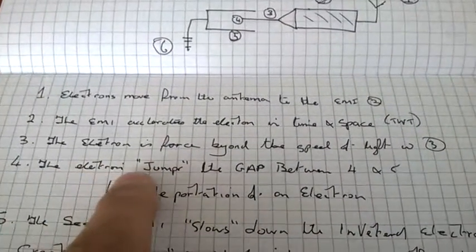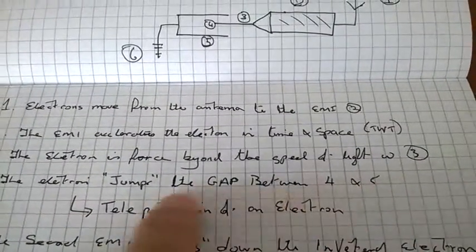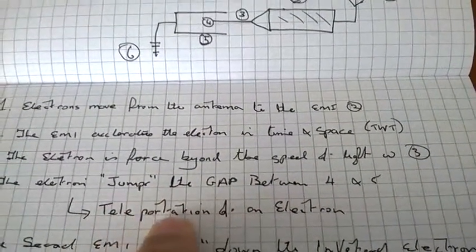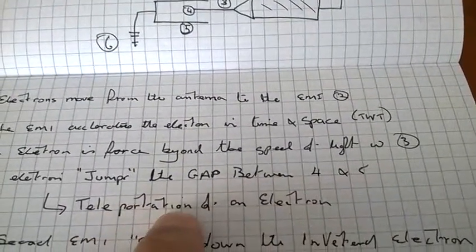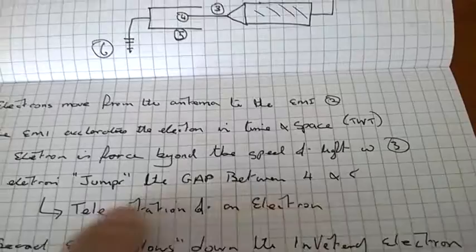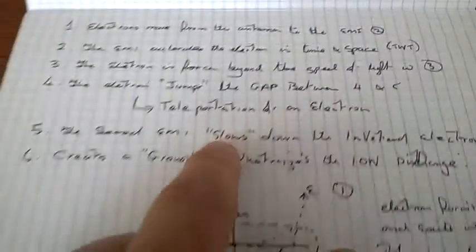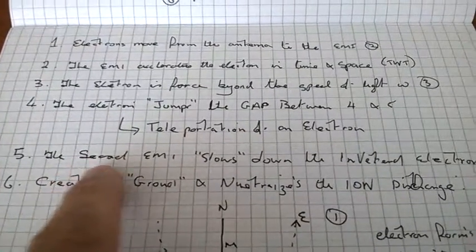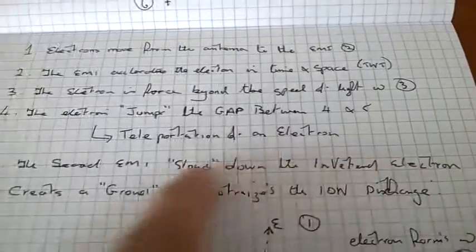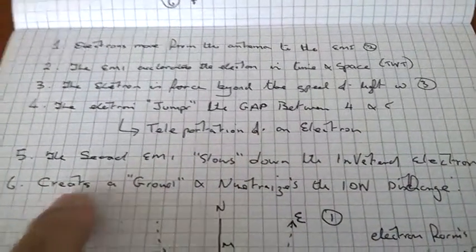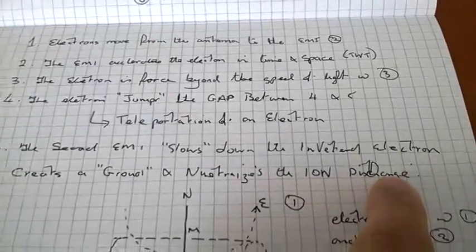The electron jumps the gap between four and five. That's known as teleportation of an electron. Yes, teleportation of an electron, move from one point to another in its own existence. The second EMI slows down the inverted electron. Six creates a ground circuit and neutralises the ion discharge.